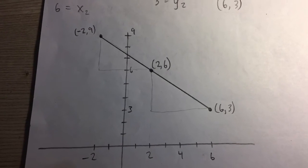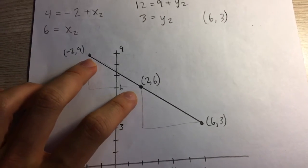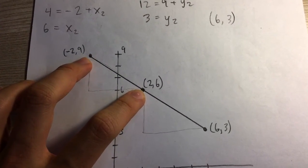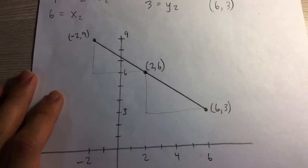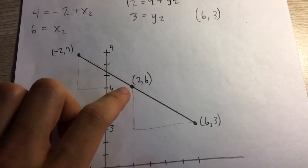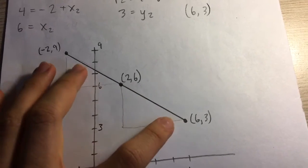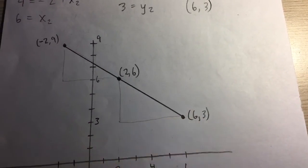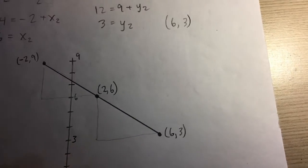And here you can see a little sketch. Here's the two points we were given, (-2, 9). This is the midpoint. This is one of the endpoints. And you can see that the distance between here and here, and here and here, they're both equal. And here is the other endpoint that we found, (6, 3).